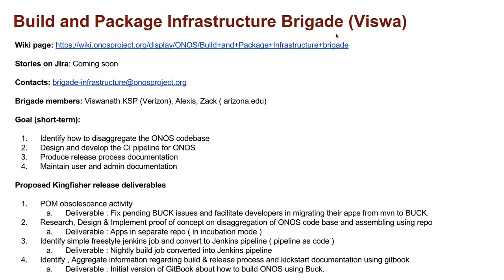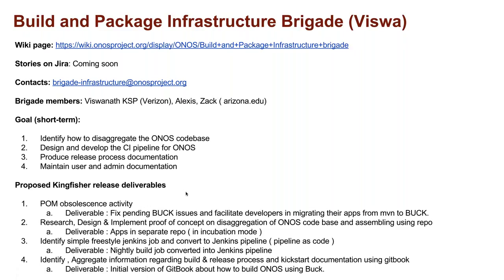Build and package infrastructure is targeting code base disaggregation mentioned in the roadmap. Short term, it's an item in the brigade goal list, as well as developing a pipeline for ONOS and making sure documentation is up-to-date. For Kingfisher, the focus will be on POM file obsolescence as well as a proof of concept for disaggregation of the ONOS code base. This will allow new projects to be hosted as separate repos and provide more independence for various projects.